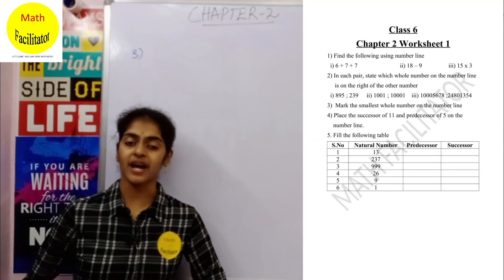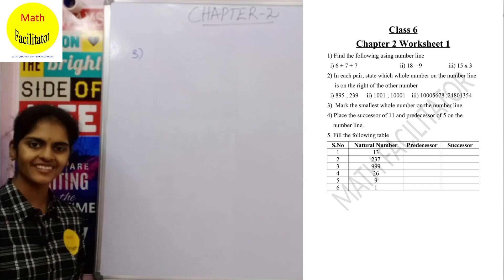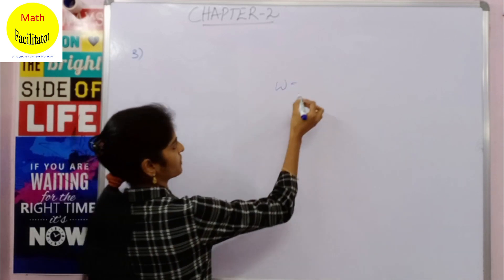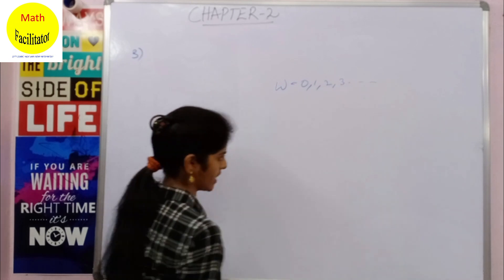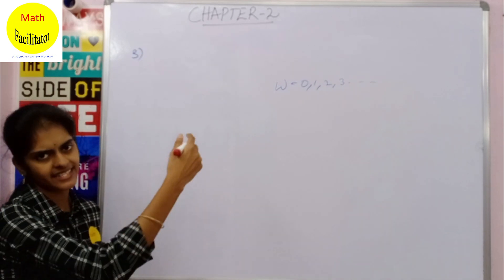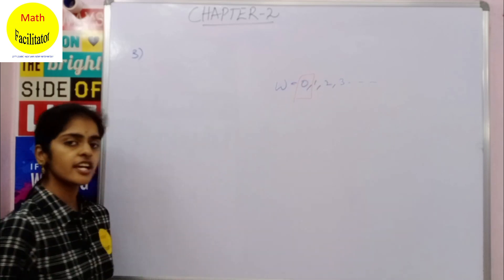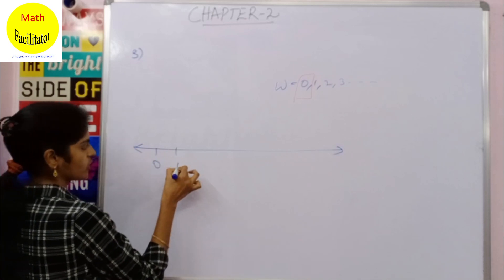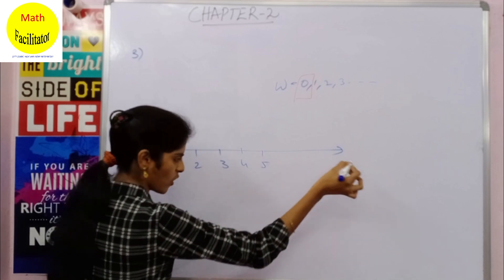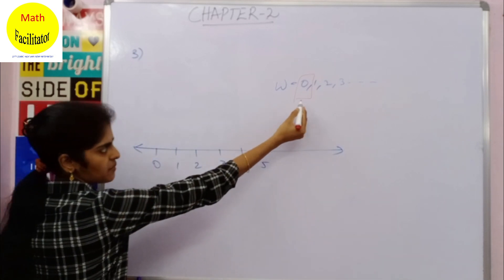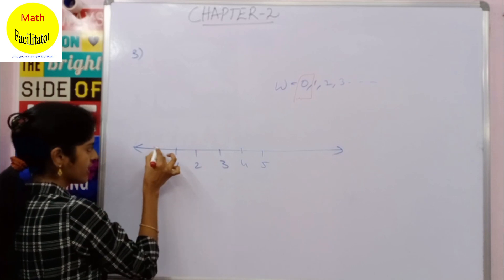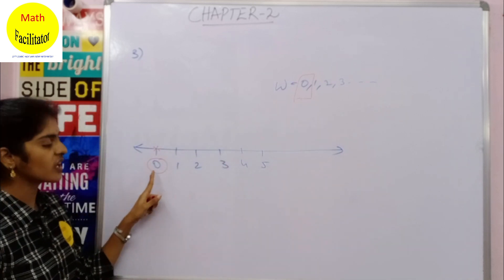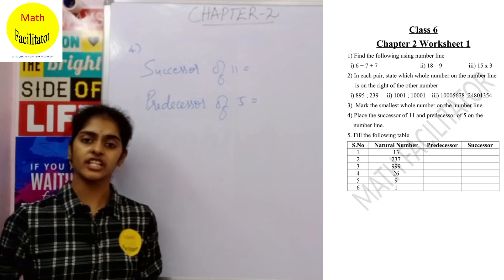The next question asks you to mark the smallest whole number on the number line. Whole numbers are numbers starting from 0: 0, 1, 2, 3, and so on. The smallest whole number is 0. On the number line you write 0, 1, 2, 3, 4, 5, and so on, and 0 is the smallest number on the number line.